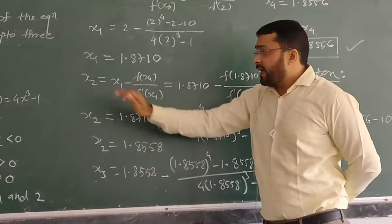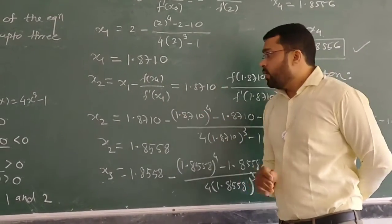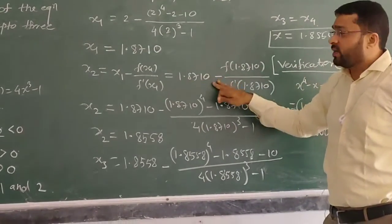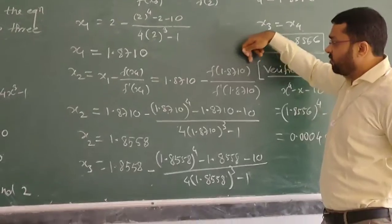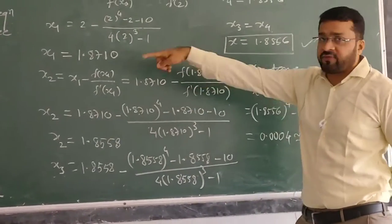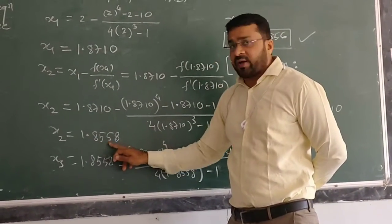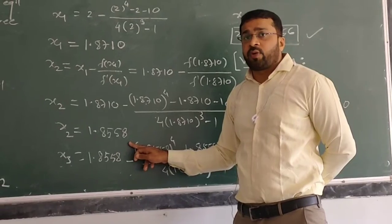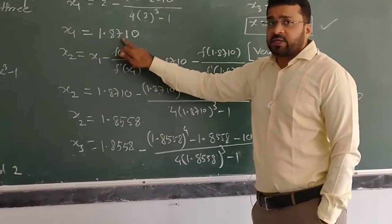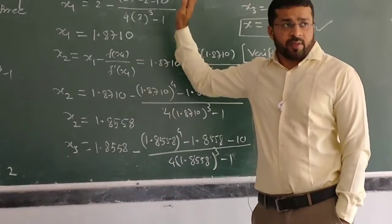For x₂, the formula is x₁ minus f(x₁) over f'(x₁). So x₁ is 1.8710. Substitute in the function: f(1.8710) over f'(1.8710). We will get x₂ value as 1.8558. We check if two consecutive values x₁ and x₂ are equal or not. Here x₁ is 1.8710 and x₂ is 1.8558, so there is much difference.